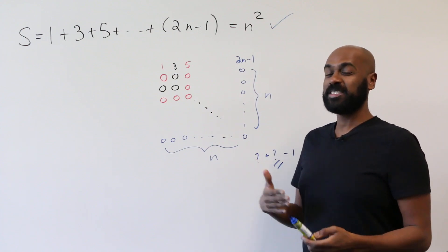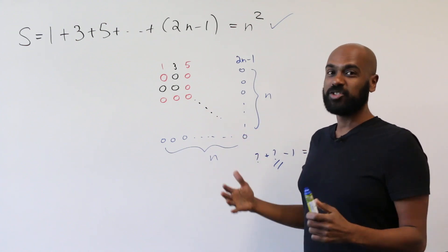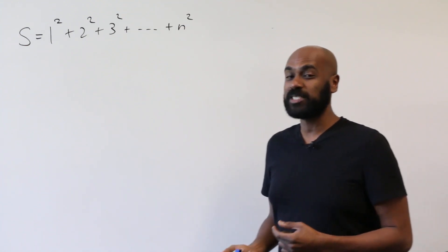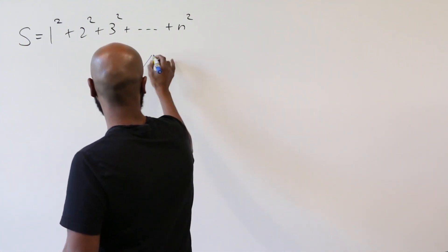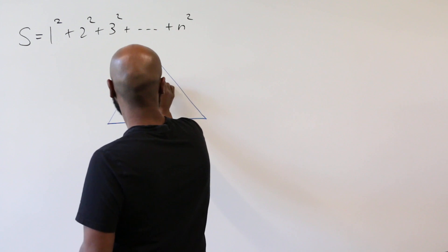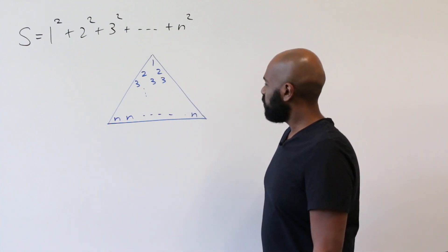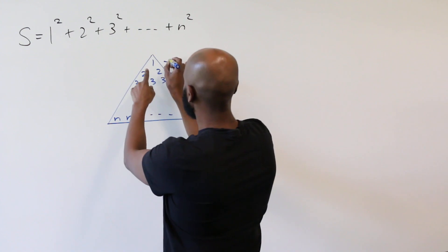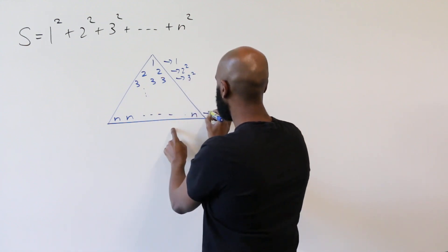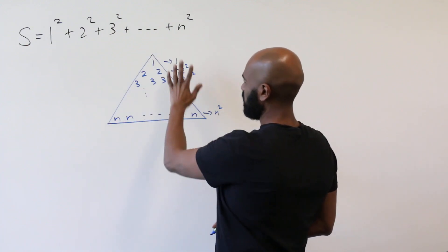Let's look at one more example — a typical problem for mathematical induction with a nice geometric proof that doesn't use induction at all. We're asked to determine the sum of the first N squares. I'll draw this geometrically in a triangular array: the number 1, then two copies of 2, three copies of 3, and so on up to N copies of N. Adding the contents of this triangle gives 1 squared plus 2 squared up to N squared, so S is the sum of the numbers in this triangular array.